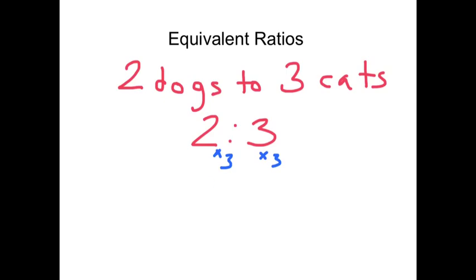So two to three is also the same as six to nine, and this is really important. It helps us solve a lot of different kinds of problems, especially in cooking and chemistry, all sorts of different situations.